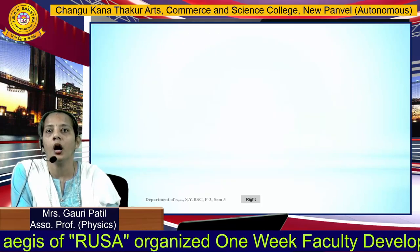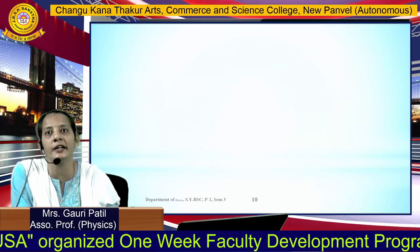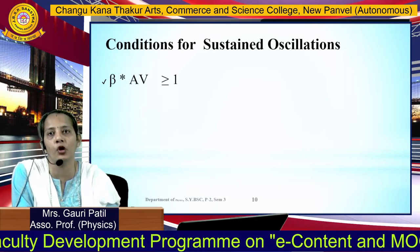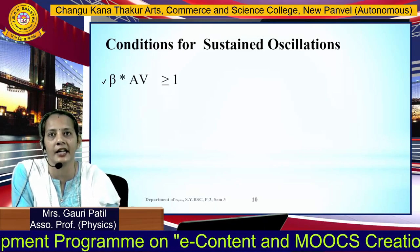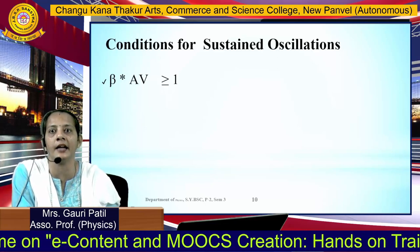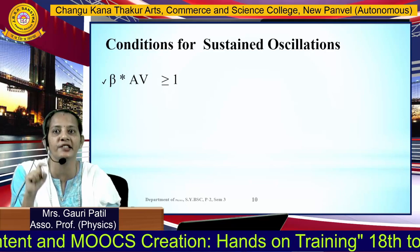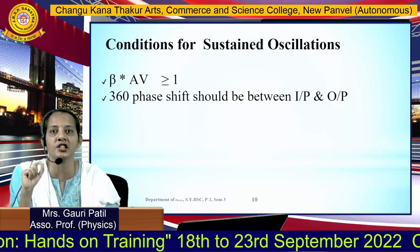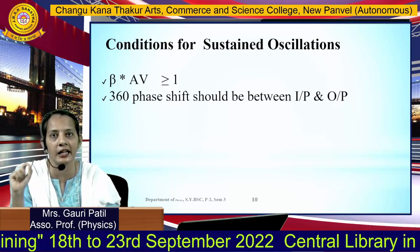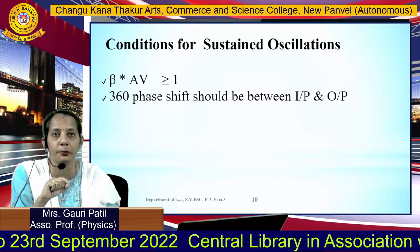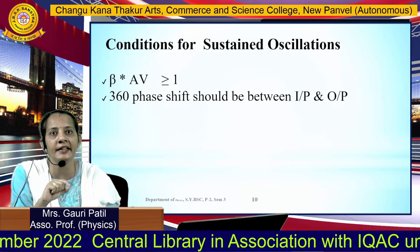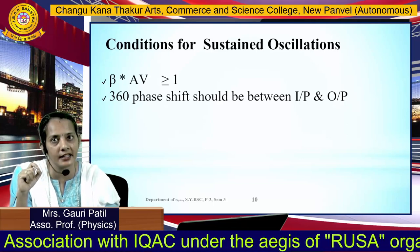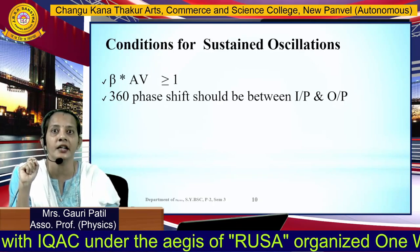The conditions required to operate oscillations are: first, the loop gain — the product of the voltage gain of the amplifier and the feedback gain of the feedback network — should be greater than or equal to 1. Second, there should be a 360-degree phase shift, meaning the total angle change between the input of the amplifier and the output of the feedback network must equal 360 degrees.